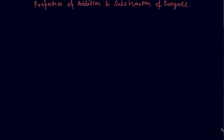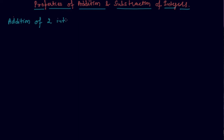Hello students, my name is Sumit Mehta. Today we will discuss properties of addition and subtraction of integers. Let me start with addition of two integers. If you add two integers, say 2 plus 3, you will get another integer, which is 5. So the result will always be an integer if we add two integers. The same is the case with subtraction.